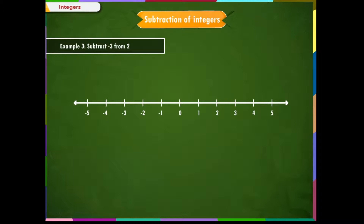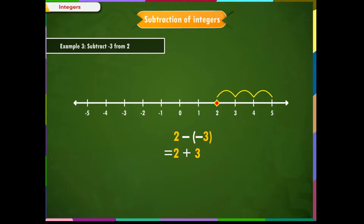Example 3: Subtract minus 3 from 2. Write the problem as 2 minus (minus 3), which can be written as 2 plus 3. Using the number line, mark the first integer. Since we are subtracting a negative integer, that is minus 3, as per our rule, we start from 2 and move three steps towards right. We reach at 5. Therefore, 2 minus (minus 3) equals 2 plus 3, which equals 5. We see that minus and minus makes plus — this is our second sign rule.